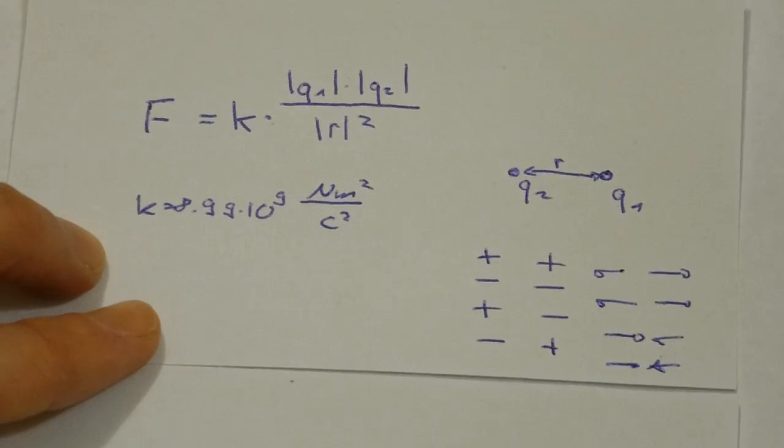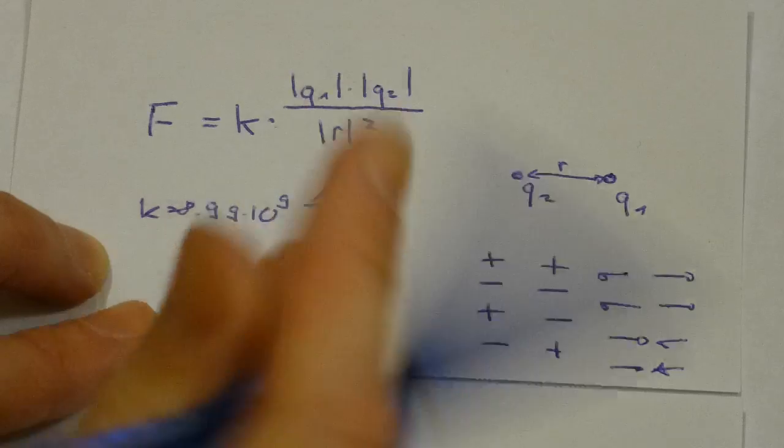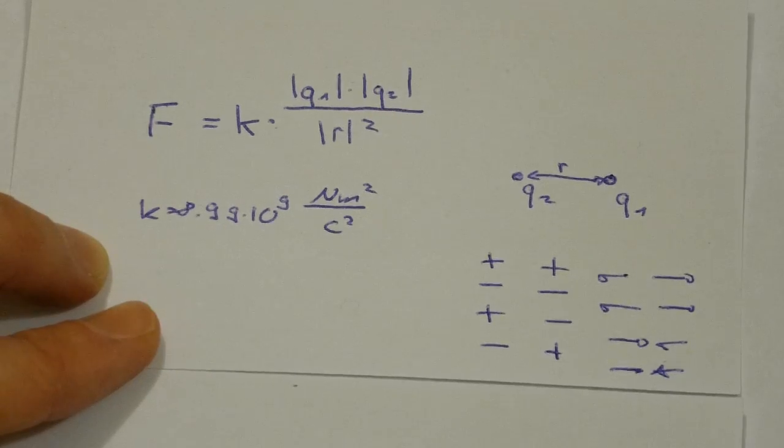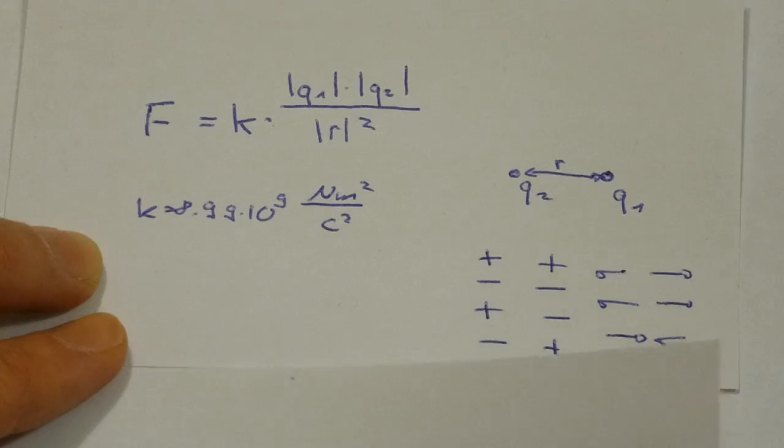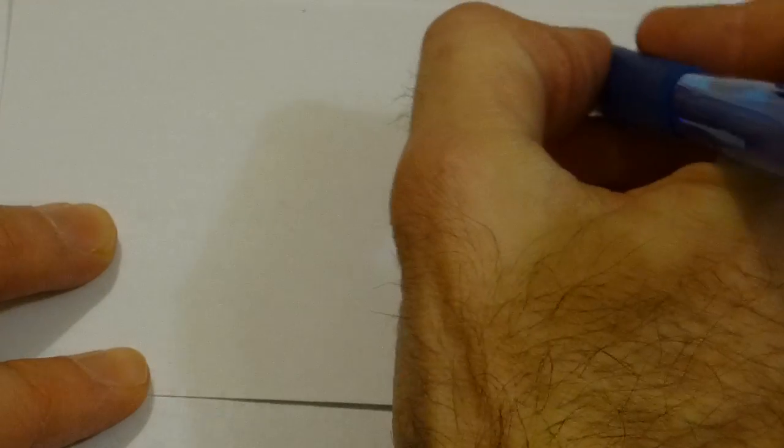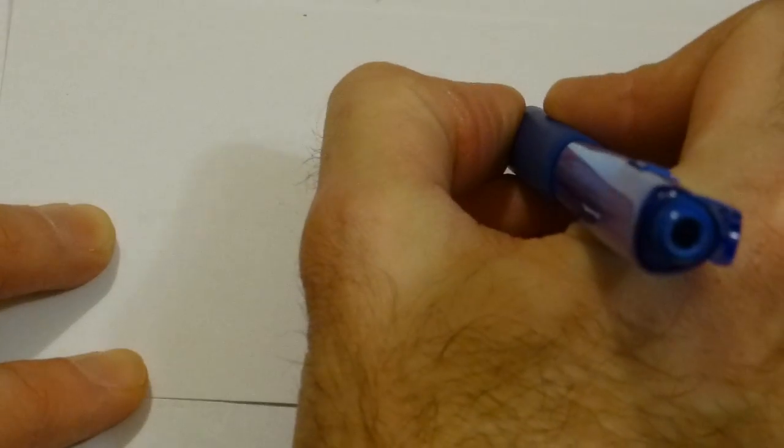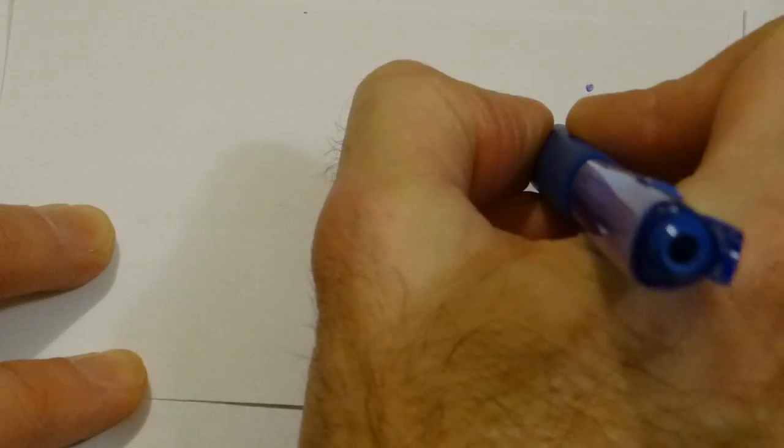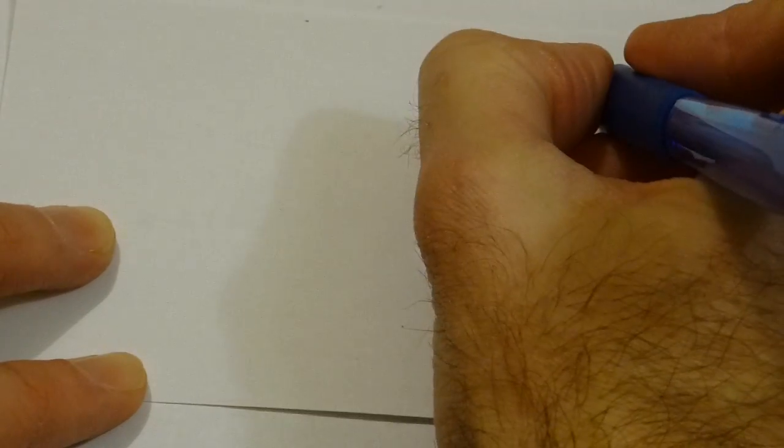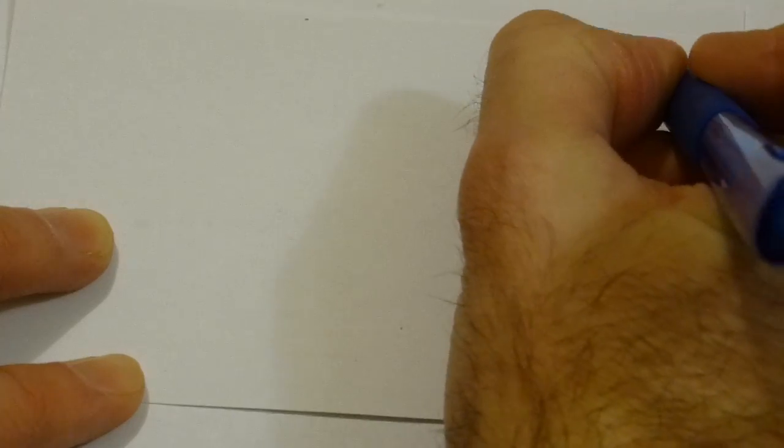Now the question is how can we change this formula so it gives us directly a vector equation for direction of the force. So if we have a particle Q1 somewhere in space and the particle Q2 somewhere else, we want to get the vector of the force of 2 on 1.